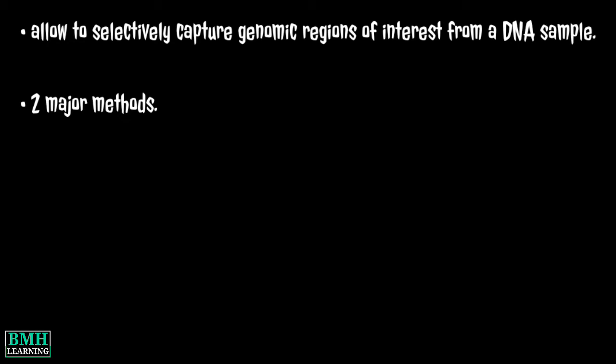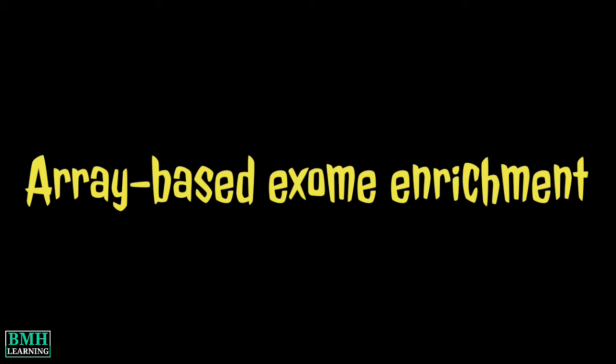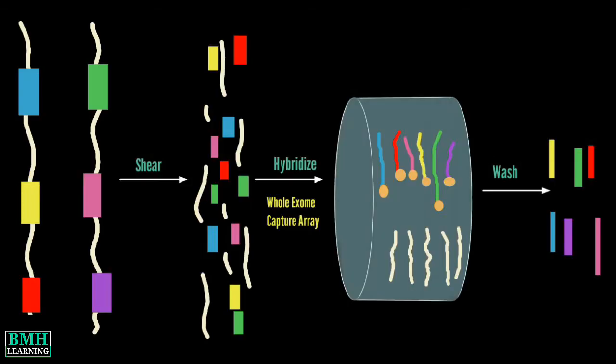The first target enrichment strategy is array-based exome enrichment. This method uses probes bound to high-density microarrays to capture the exome. A microarray is a two-dimensional array on a glass slide or silicon thin film, which contains oligonucleotides complementary to target genome parts. While the fragmented DNA samples flow through the microarray, the complementary pairing effect forces exome binding at the microarray, with other parts of the genome remaining dissociative, resulting in separation of the exome.